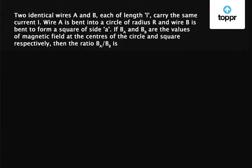So in the first case, the wire of length L was bent into a circle of radius R. So we have a circle of radius R and current I is flowing through it. So we have the circumference of the circle equal to the length of the wire, which was L. So we have 2πR equals L, which implies R equals L upon 2π.